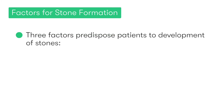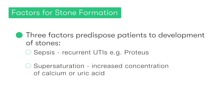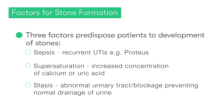Looking at why stones actually form, we can remember the three major factors by remembering the three S's. The first S stands for sepsis, or more specifically, patients who have recurrent urinary tract infections, such as Proteus, which is associated with the formation of struvite stones. The next S is supersaturation — when the patient has an increased urinary concentration of the specific stone-forming constituent, such as calcium or uric acid. And the third S refers to stasis — when there is an abnormal urinary tract or blockage preventing the normal drainage and flow of urine.